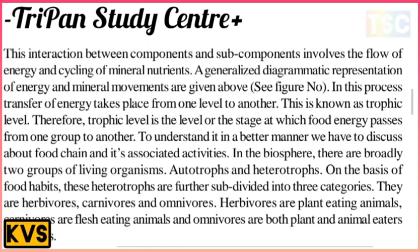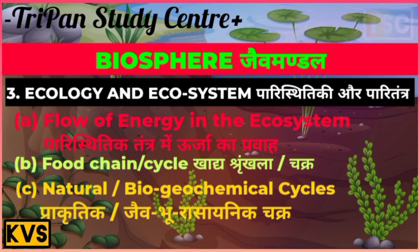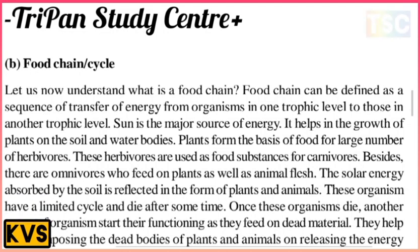The food chain can be defined as the sequence of transfer of energy from organism to organism at one trophic level to another. The sun is the major source of energy, helping in the growth of plants on land and in water bodies. Plants form the basis of food for a large number of herbivores, and these herbivores are used as food by carnivores. Besides, omnivores feed on both plants and animal flesh.